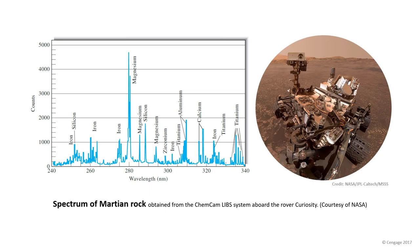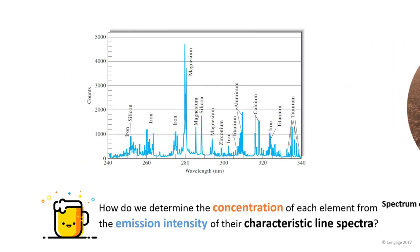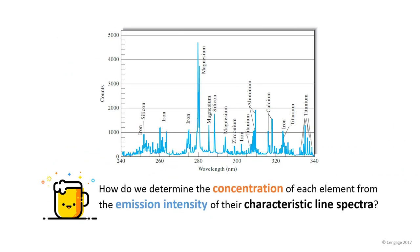This diagram here shows an atomic emission spectrum of a Martian rock obtained from the rover Curiosity. As we can see here, each element has a set of characteristic emission wavelengths as indicated on the x-axis, and on the y-axis we have the counts which represent the emission intensity. Then the next question would be, how do we determine the concentration of each element present in our sample from the emission intensity of their characteristic line spectra?